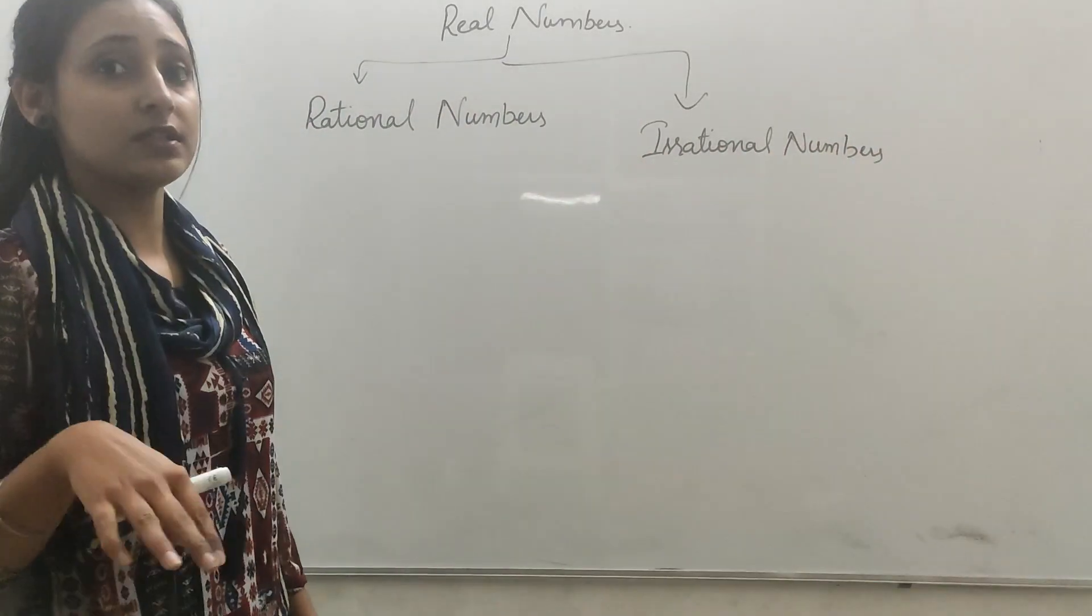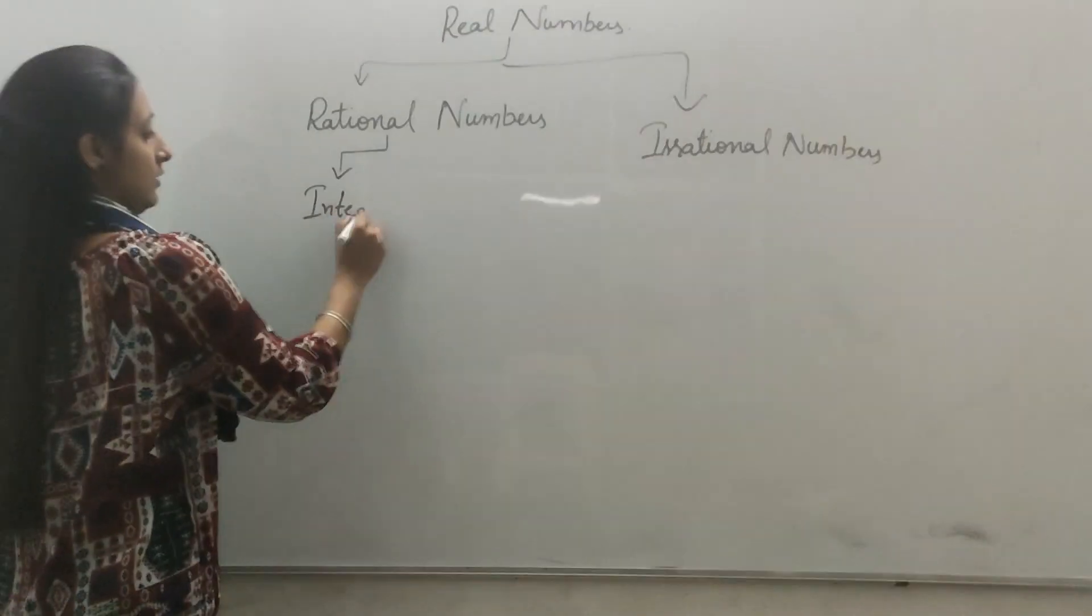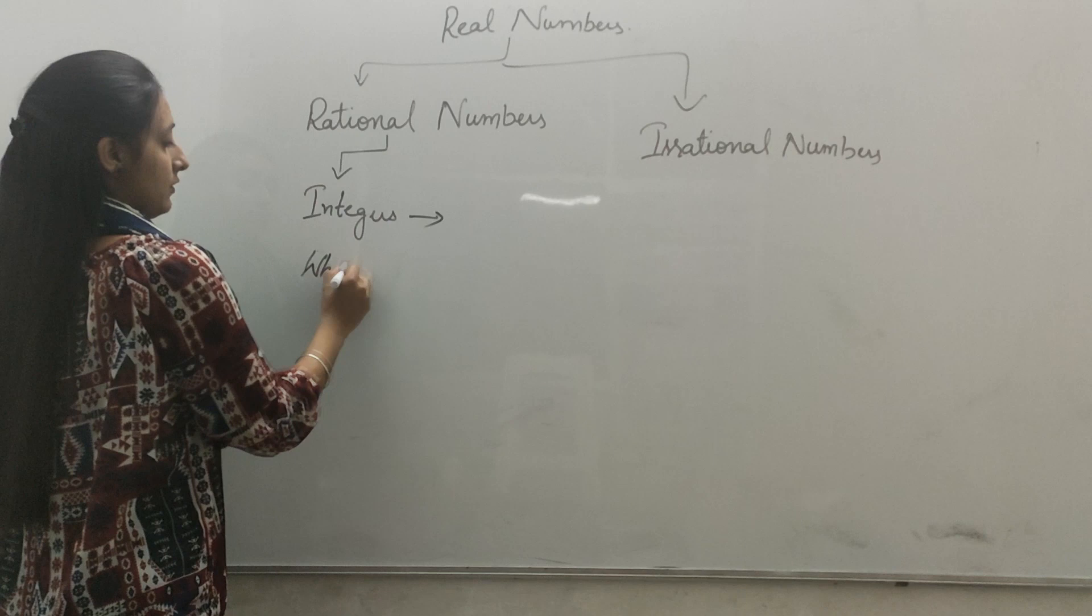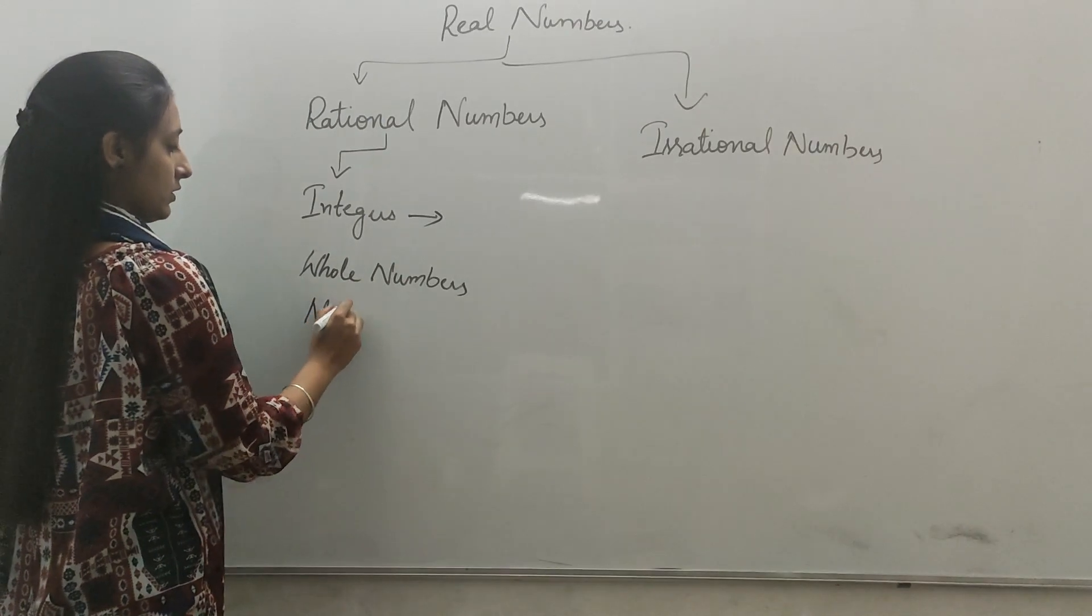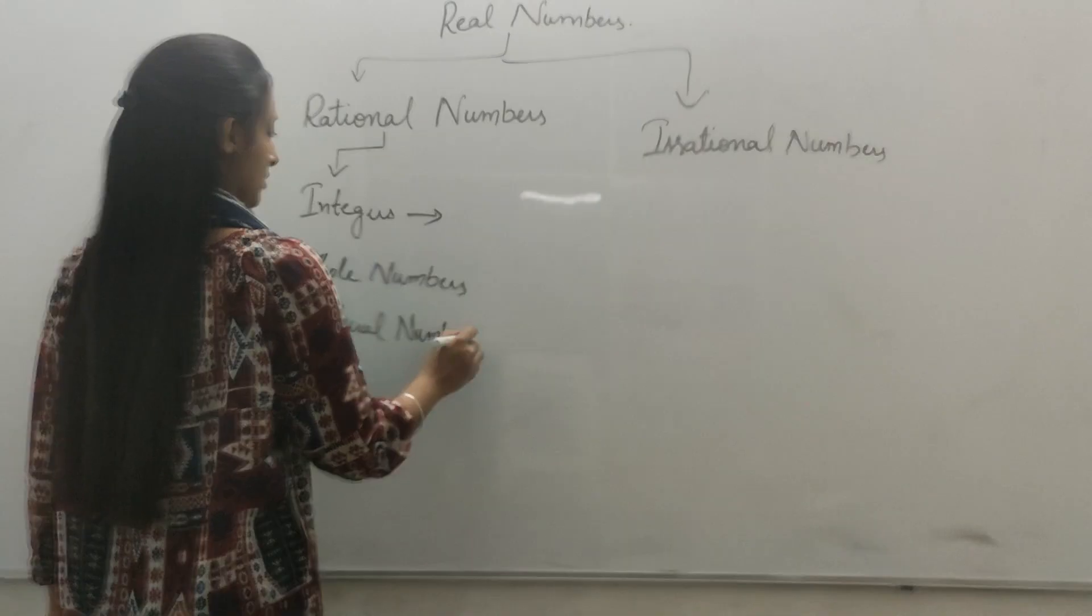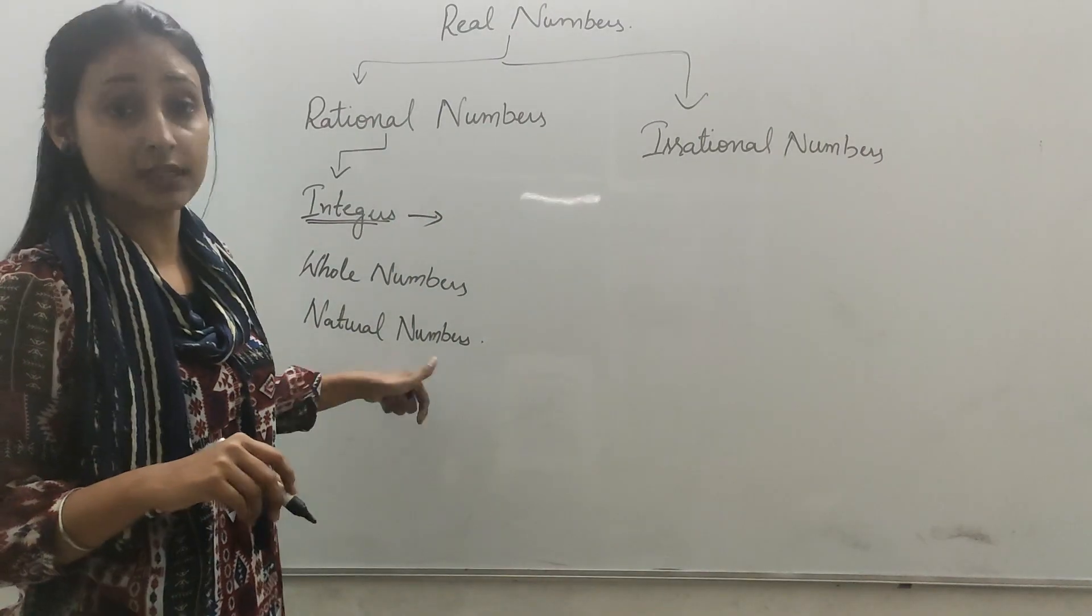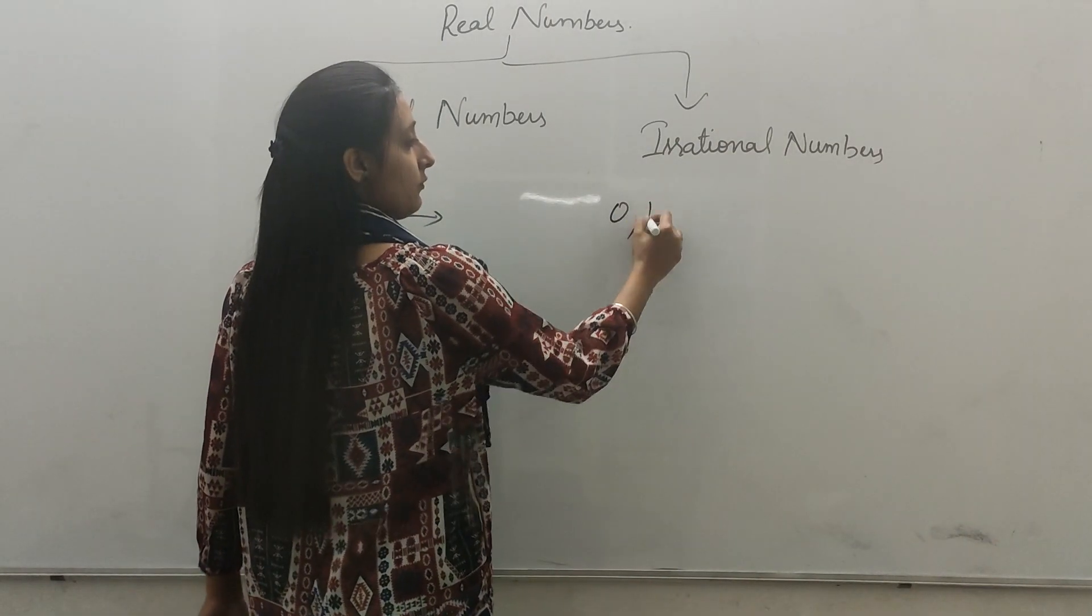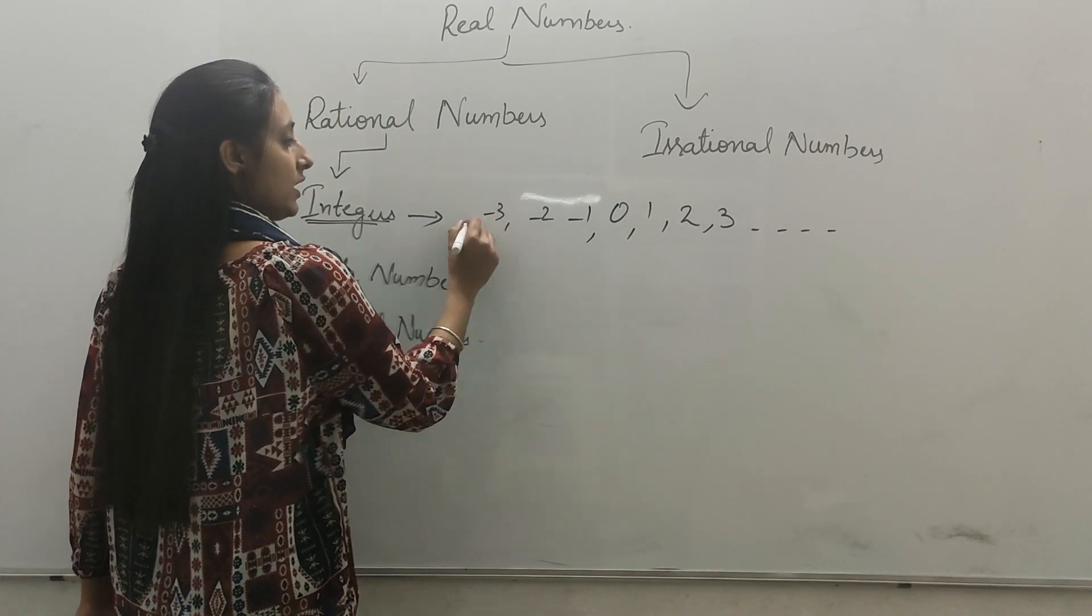And rational numbers include integers, whole numbers, and natural numbers. Integers are combination of whole numbers and natural numbers, negative and positive both types of numbers: zero, one, two, three and so on, minus one, minus two, minus three and so on.